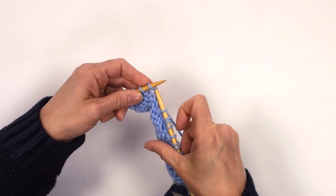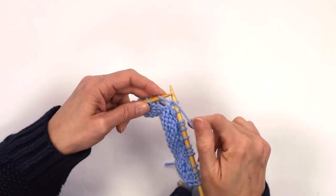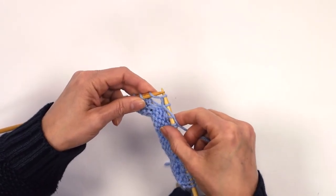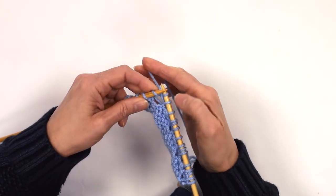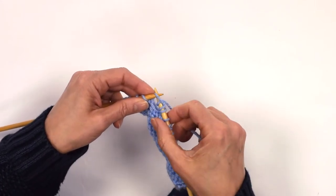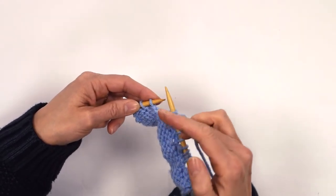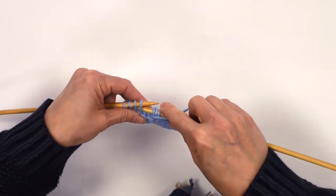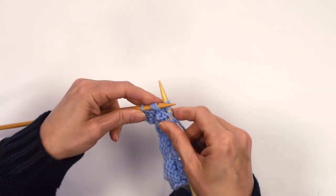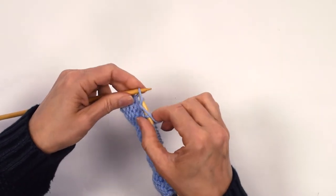Purl three together. So again, into your next stitch, knit, yarn between your needles, purl, yarn back between your needles, keep it there, knit. And then bring the yarn back between the needles, purl, purl three together, and your final stitch is a purl.